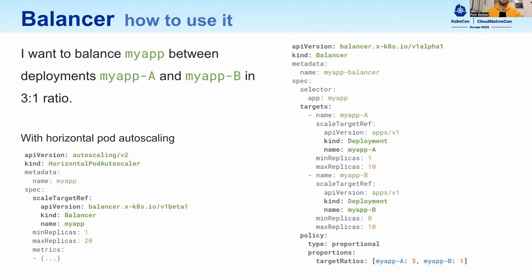This combines well with horizontal pod autoscaling, so we can define an HPA that has the balancer object as its scale target. This HPA covers the whole workload — both deployments combined — and recommends by updating the scale on the balancer object. The balancer controller then distributes this new scale across its targets, deployment A and B.